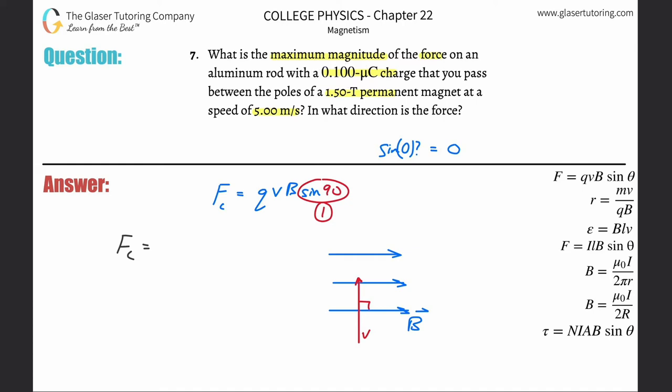The charge they gave us here was 0.1 micro coulombs. We need that in coulombs. So that's 0.1 times 10 to the minus six. The velocity here is in meters per second. So that's fine. We don't have to change anything. The magnetic field, by the way, is measured in Tesla, not the car, but for the scientist that actually did a lot of study that studied magnetism.